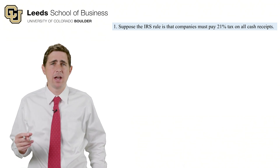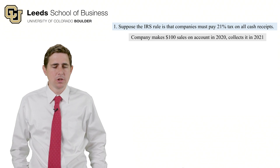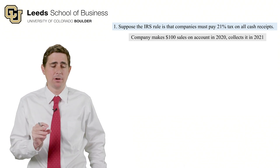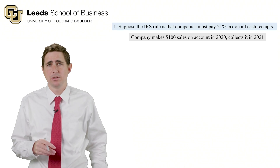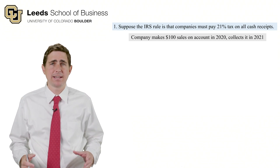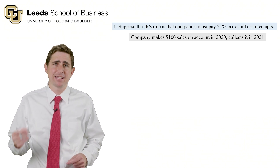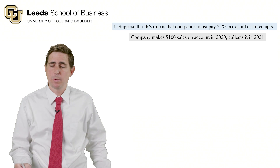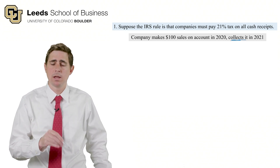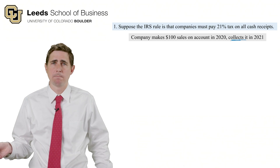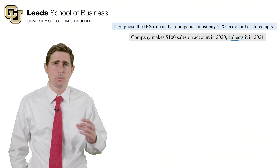That's kind of similar to how the IRS thinks about tax rules. Now here's the fact pattern: the company makes $100 of sales on account in 2020. 'On account' means accounts receivable — they haven't received the cash yet — and they're not going to collect the cash until 2021. That's when they have to pay tax.